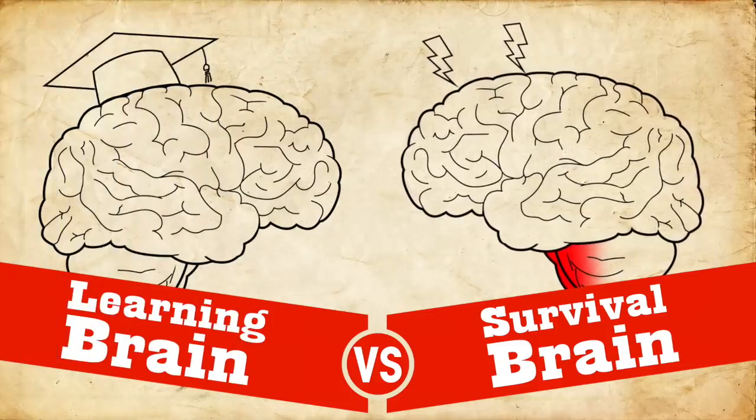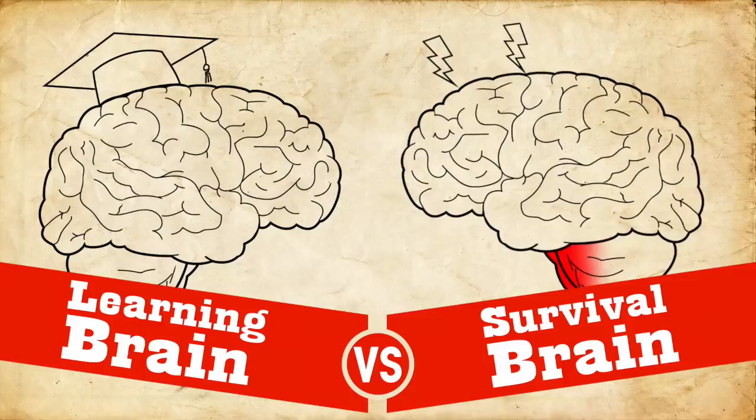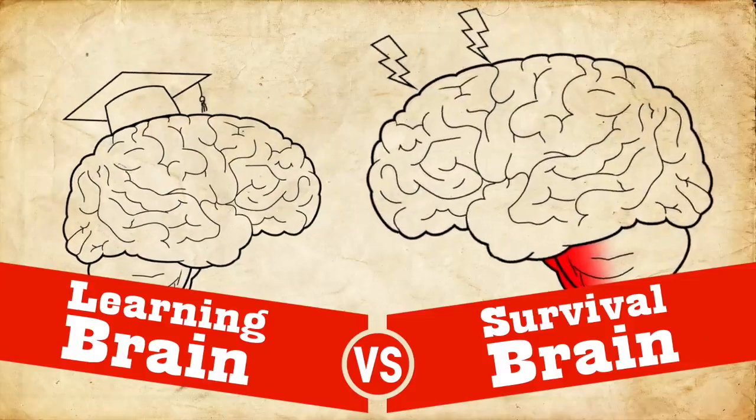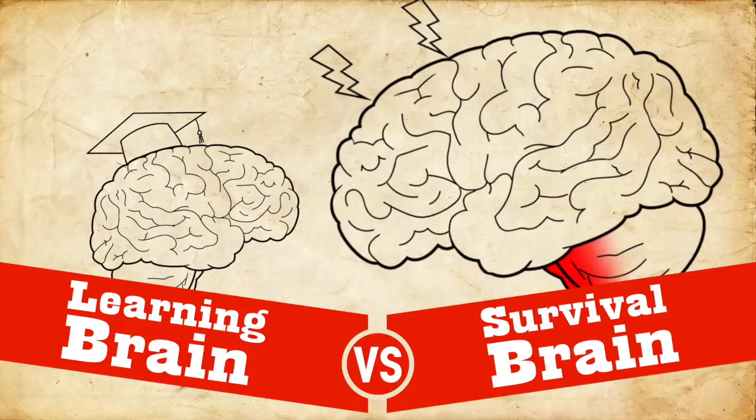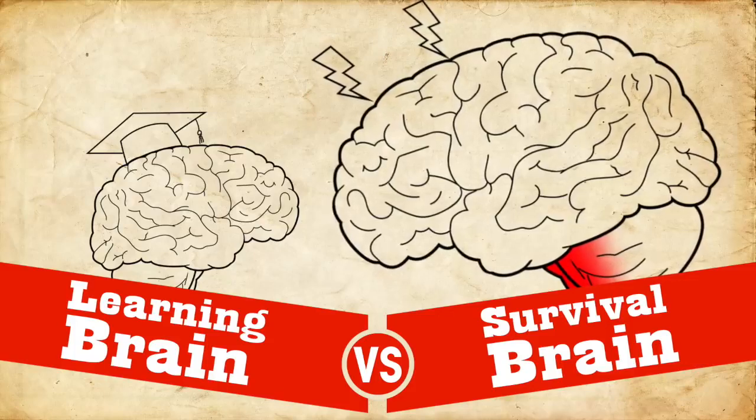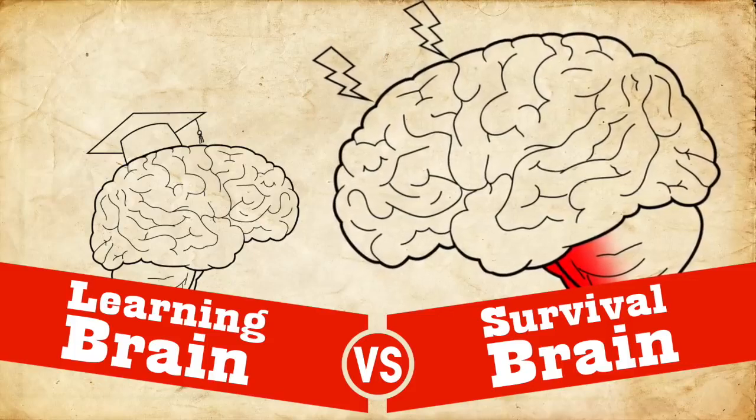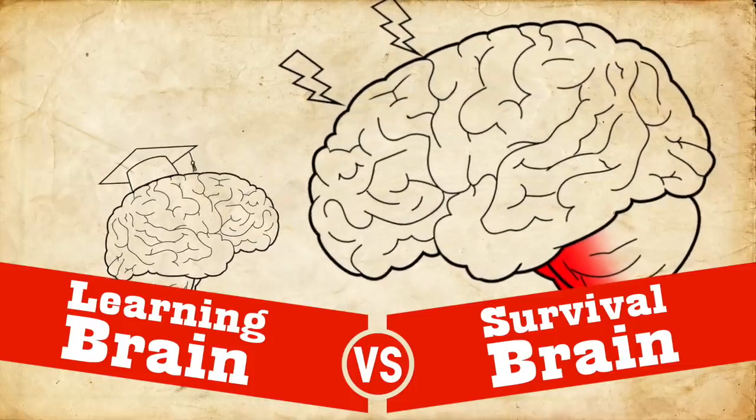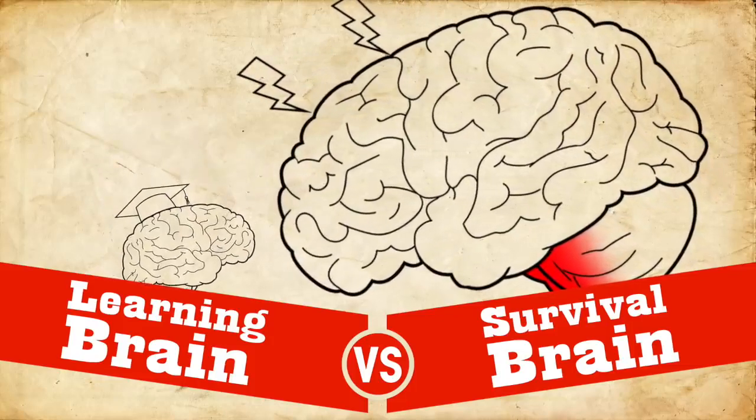Now it's really important to understand how learning brain and survival brain interact. Because survival brain always trumps learning brain. And it makes sense because survival brain is just trying to save your life. And so if it thinks that there's something dangerous happening, you better pay attention to it, right? But the tricky thing is that as survival brain stays on longer and longer, it's harder to get out of that. And it's harder to really go into learning brain.